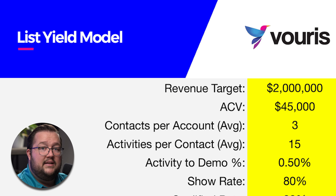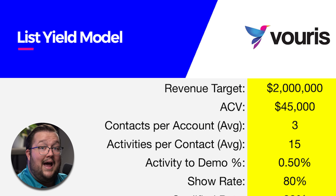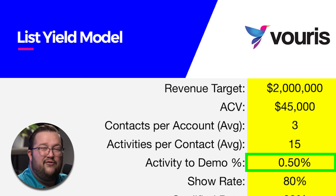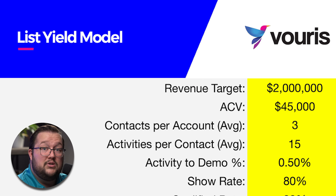Activity-to-demo percentage: out of every hundred activities — calls, emails, LinkedIn — how many meetings are you booking? If that's one meeting per hundred activities, that's 1%. If that's half a meeting per hundred activities, that's 0.5%. For this example I'm going to use 0.5%, which is the floor of what I use when I model. Typically I see this number anywhere above 0.6% all the way up to 4%, depending on the market that they're targeting.